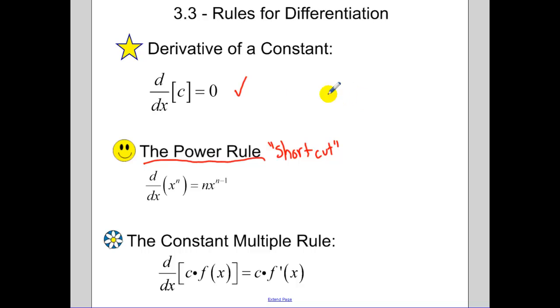So the power rule, you're taking the derivative with respect to x of some function where n is an exponent. You bring the exponent down in front, and that becomes a coefficient, and you can multiply to any of the coefficients that are in front of the x, and you reduce the exponent by 1.